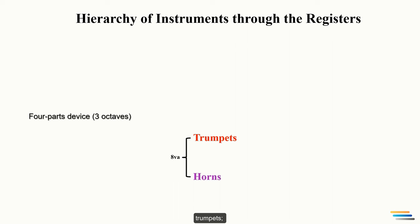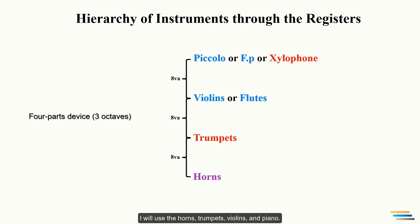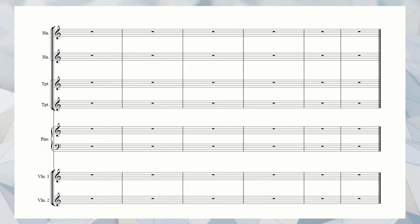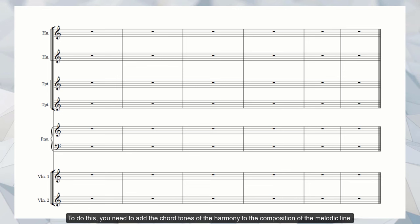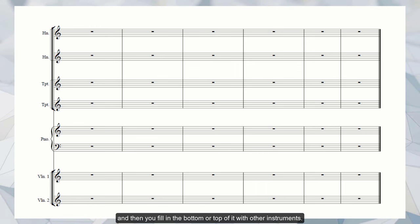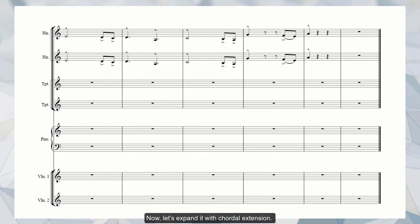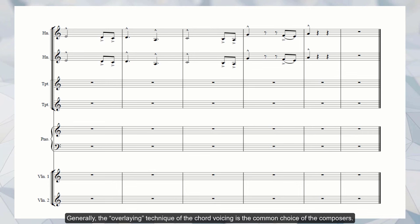So the hierarchy of the instruments throughout the registers will be as follows: Horns, trumpets, violins or flutes, piccolo, xylophone. I will use the horns, trumpets, violins, and xylophone. Let's start to make a chordal device. So how to apply the four-part writing to the single-line melody? To do this, you need to add the chord tones of the harmony to the composition of the melodic line. First, you must assign the melody to any instrument. And then you fill in the bottom or top of it with other instruments. So, in my case, let the horns continue the melodic phrase as before. Now let's expand it with chordal extension. Generally the overlaying technique of the chord voicing is a common choice of the composers.